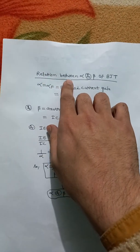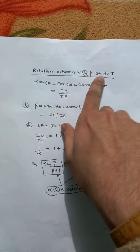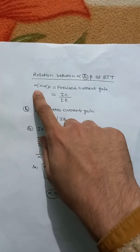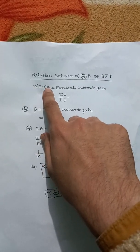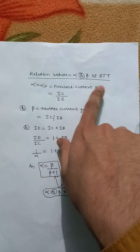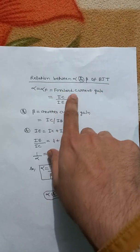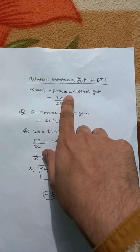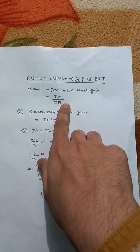Here we will discuss the relationship between alpha and beta of BJT. Alpha is equal to alpha F, meaning the forward current gain. It is denoted by IC/IE, where IC is the collector current and IE is the emitter current.